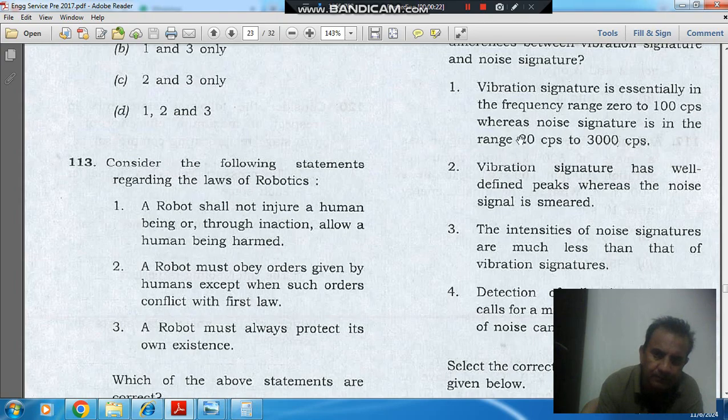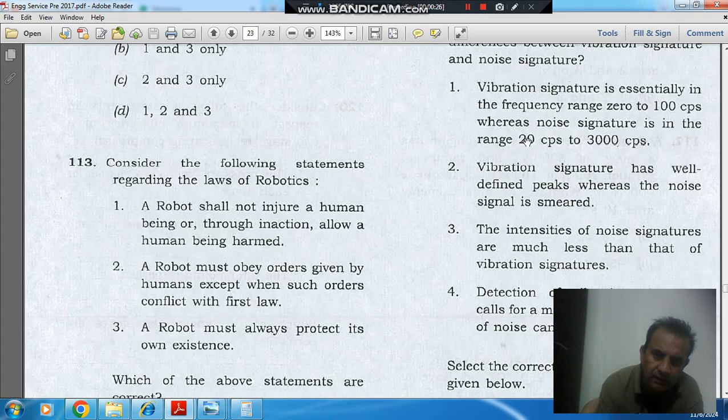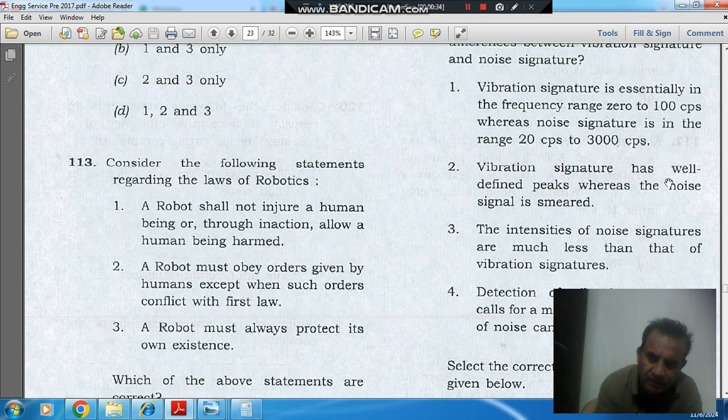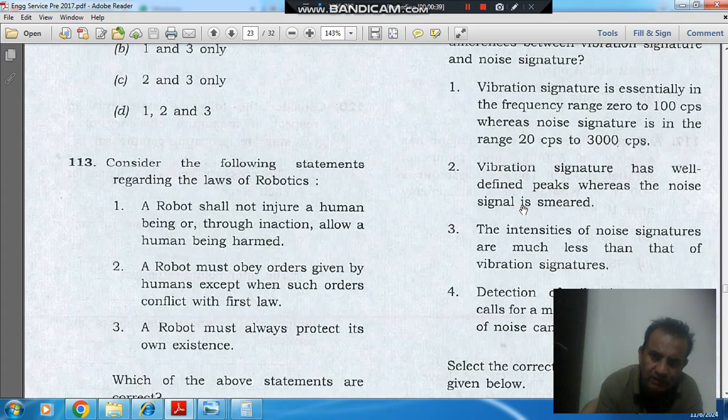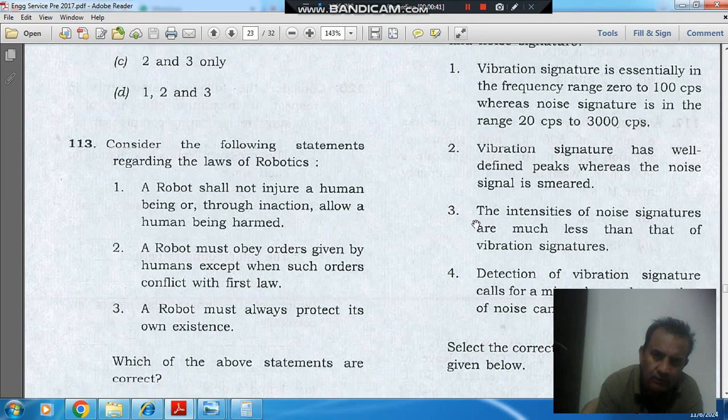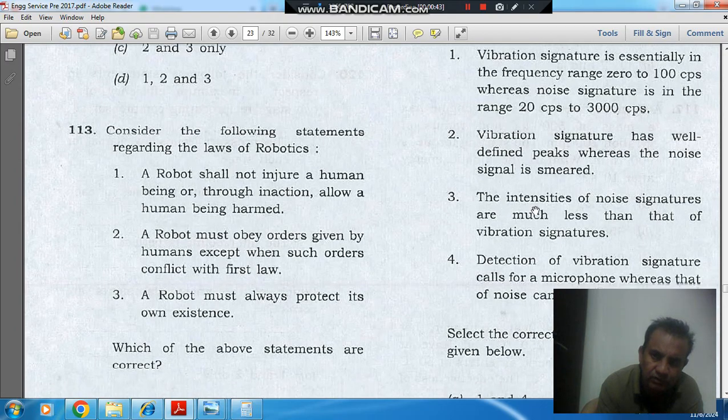20 cycles per second to 3000 cycles per second. Two: The vibration signature has well-defined peaks, whereas the noise signal is smeared. Three: The intensity of noise signatures are much less than that of vibration signatures.